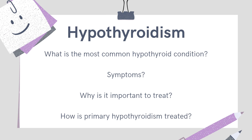Now, let's talk about the opposite — hypothyroidism. In the United States, Hashimoto thyroiditis is an autoimmune condition that causes most cases of primary hypothyroidism. In hypothyroidism, all the metabolic processes are slowed down. Common symptoms and findings here might be weight gain, cold intolerance, constipation, hair loss or brittle nails, delayed reflexes, bradycardia, menorrhagia, facial swelling, and possibly even a goiter as well.